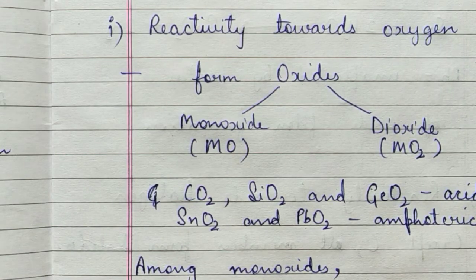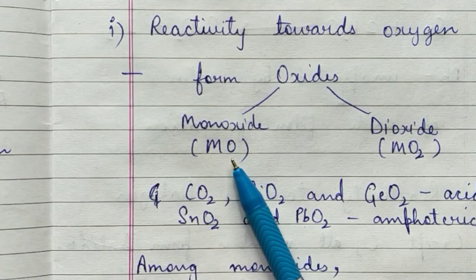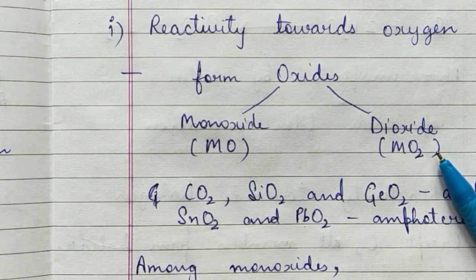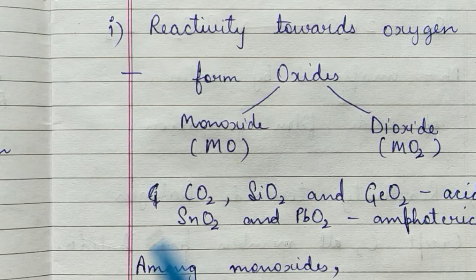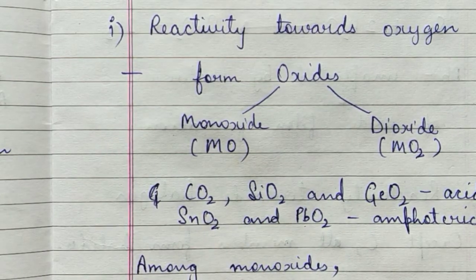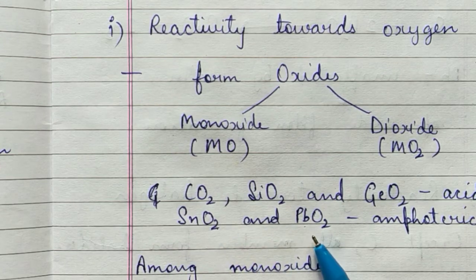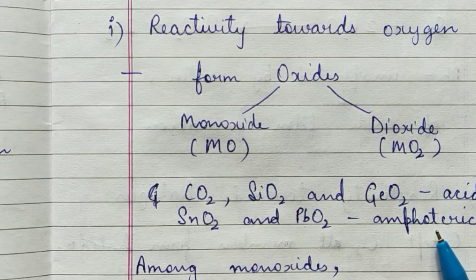Next, reactivity towards oxygen: the carbon family members react with oxygen to form oxides. Two types of oxides are seen — monoxides and dioxides. For dioxides: carbon dioxide and silicon dioxide and germanium dioxide are acidic in nature, whereas tin and lead dioxides are amphoteric in nature.